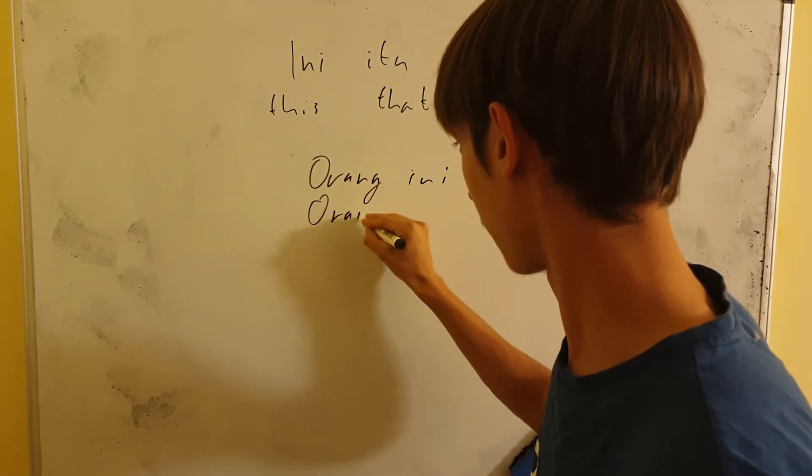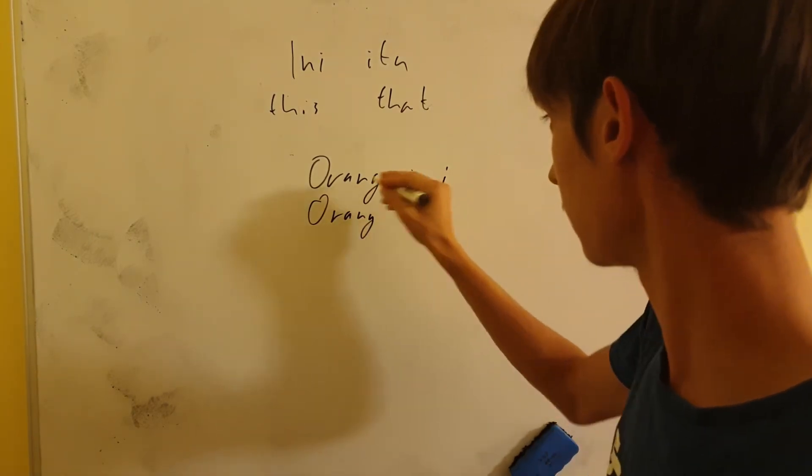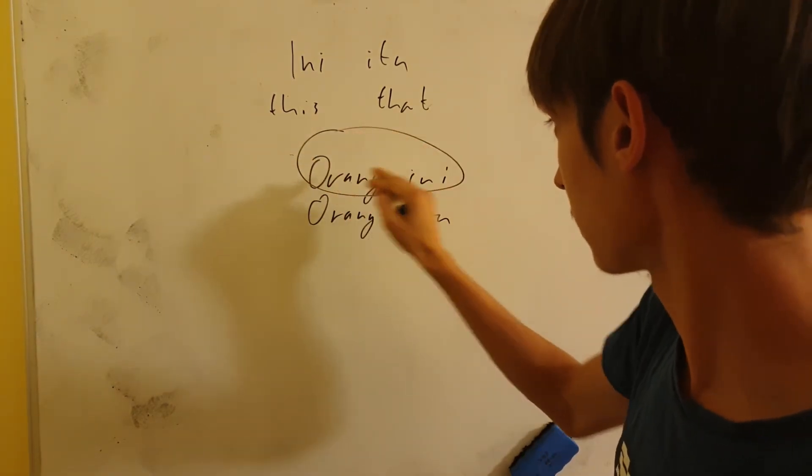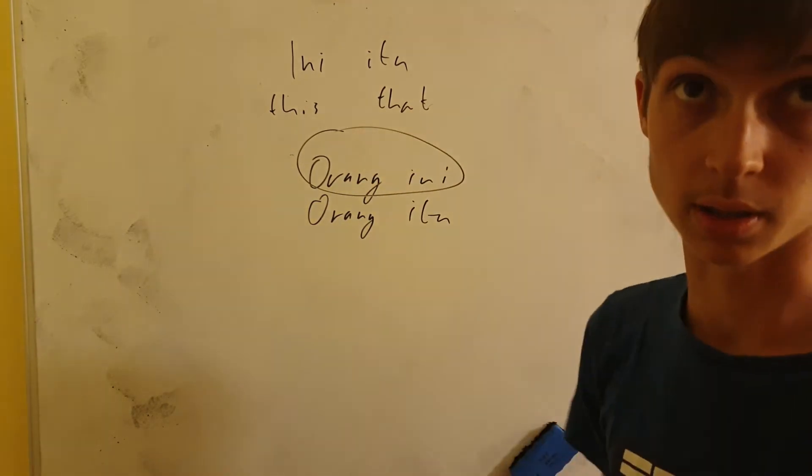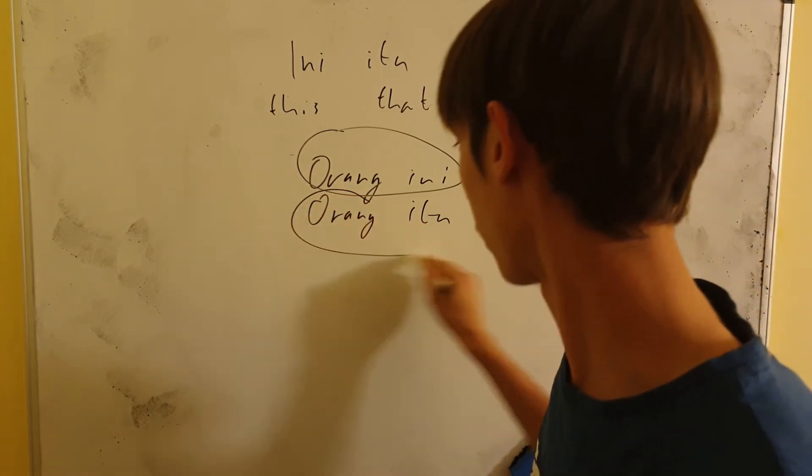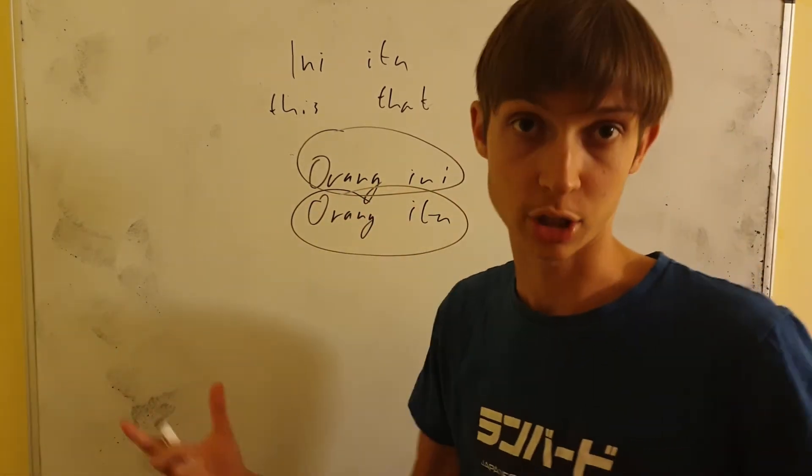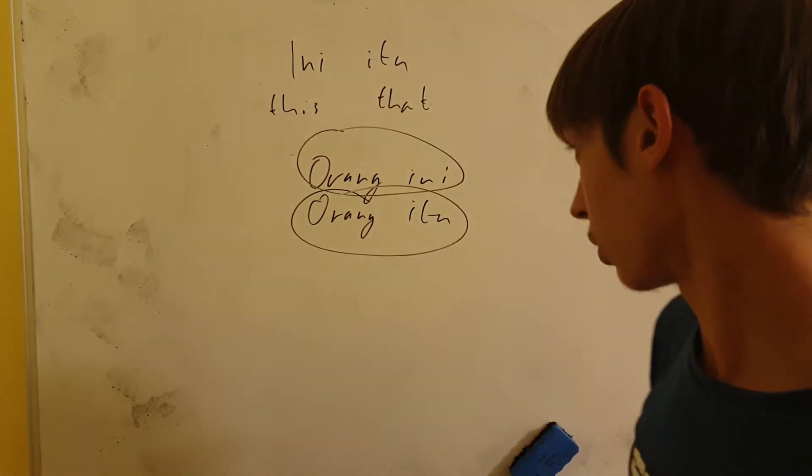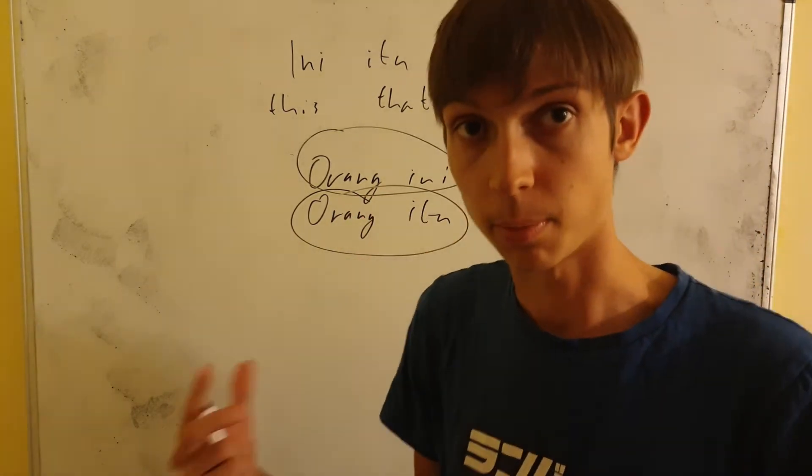ORANG INI, ORANG ITU. So, this means person, this means this. So, this means this person. You put this after the word. So, keep that in mind. And ORANG ITU, just like with any other adjective in Indonesian, you put it after the word. So, ORANG ITU, that means that person.